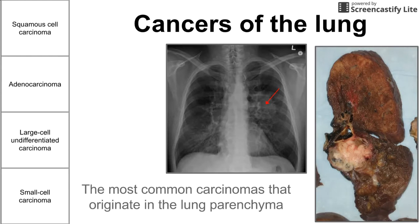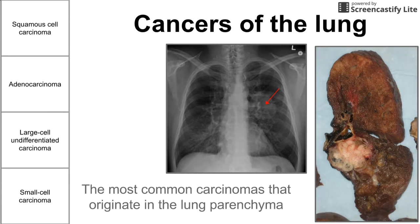This is a short presentation on the most common cancers of the lung. We're going to be talking about the most common carcinomas that originate in the lung parenchyma. It's important to differentiate between these and metastases that spread to the lung. The lung is a very common place for metastases to deposit, but we're going to be talking about four cancers that originate in the lung.